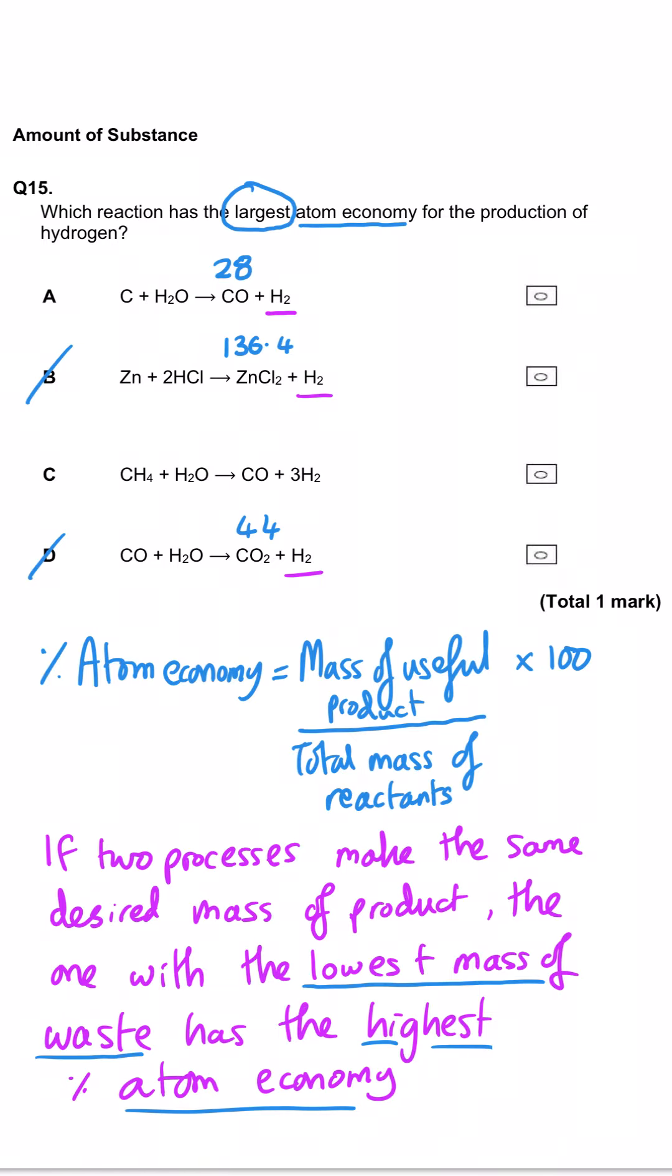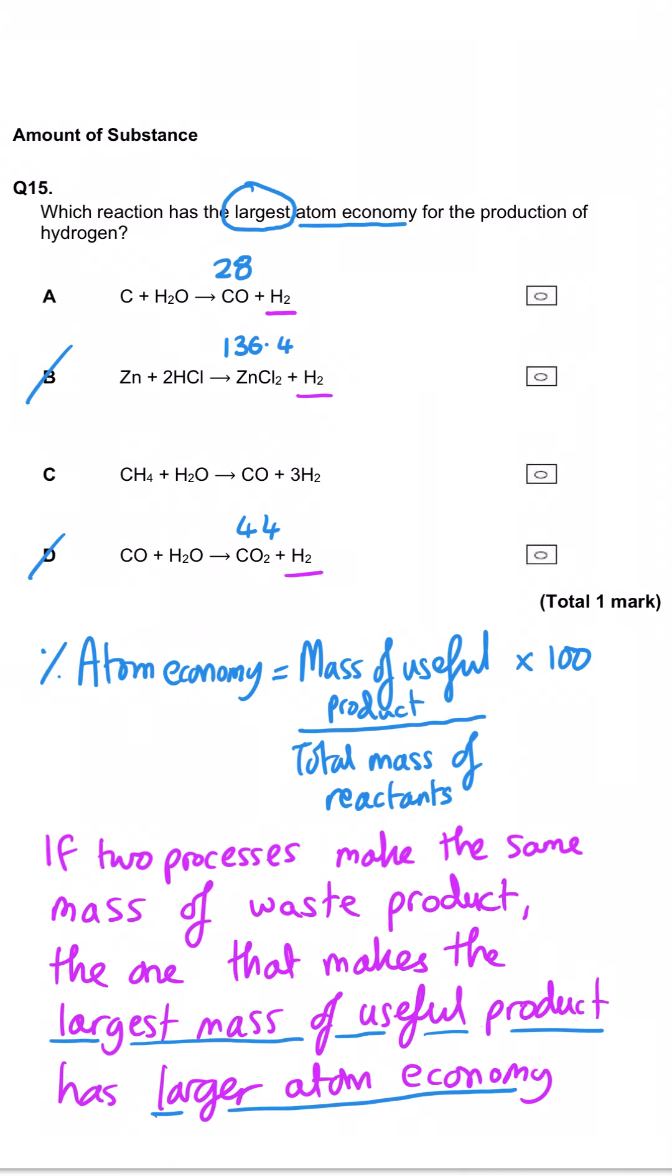We could calculate percentage atom economy of the remaining two, but if we look at them both, they both have the same waste product, carbon monoxide with an MR of 28. However, A only produces one molecule of hydrogen, C produces three molecules of hydrogen. C is producing more hydrogen gas, our target molecule, but has the same mass of waste product. C has to have the largest atom economy because we're getting a greater percentage of useful product per total mass of reactant. So C is the right answer.